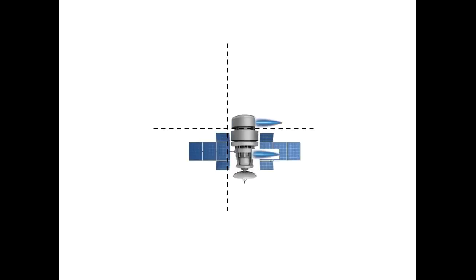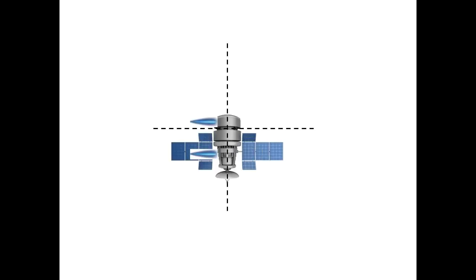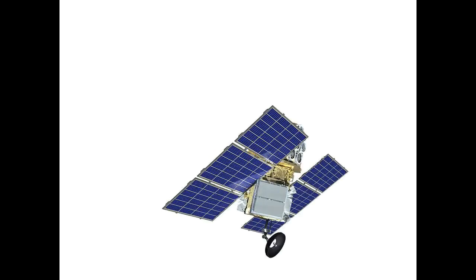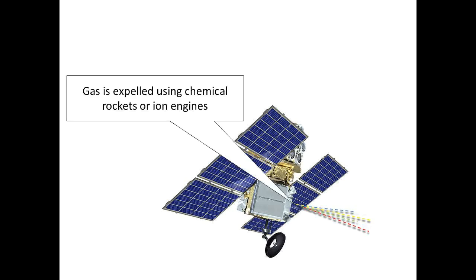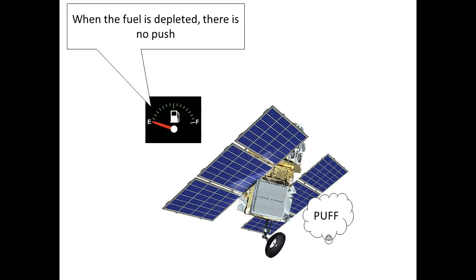This is because to function properly a satellite must occasionally correct its position. This is done by giving the satellite a little push. In space the push is generated by small rockets or ion motors. All these motors use fuel. When they run out of fuel there is no more push.